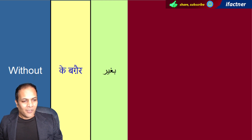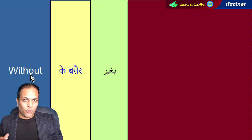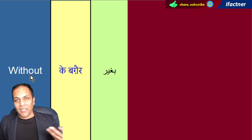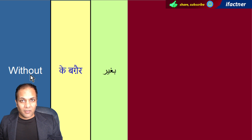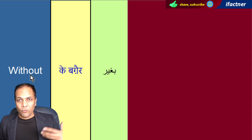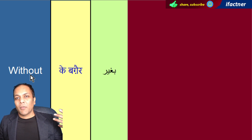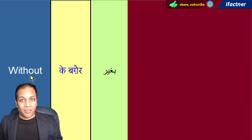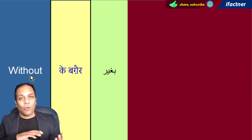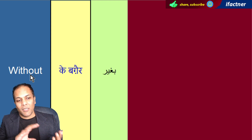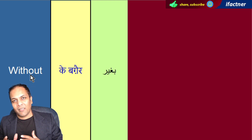Dostoon, word 'without' — 'with' ka opposite hota hai. 'With' ka meaning hota hai 'ke saath'. I'm doing it with your help — mein yeh aapki madad ke saath ker raha hoon. Aur 'without' ka meaning hota hai 'ke bagair'.